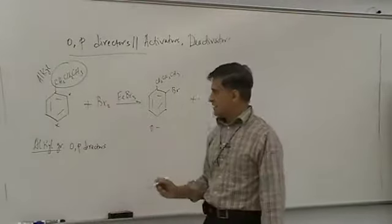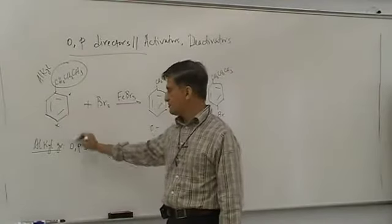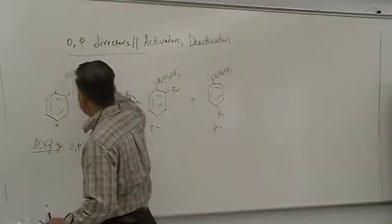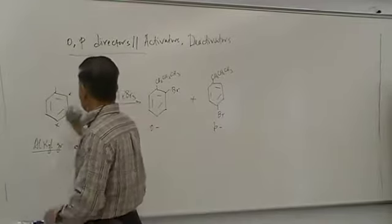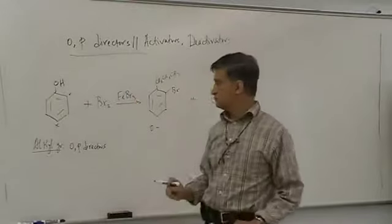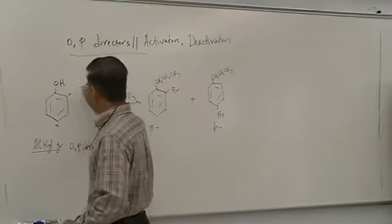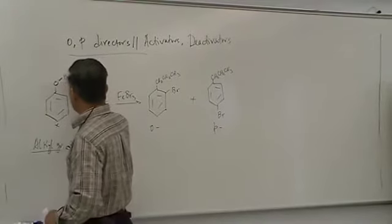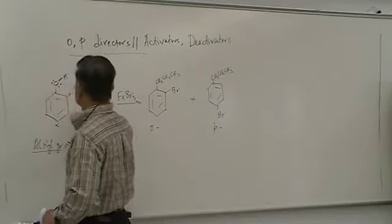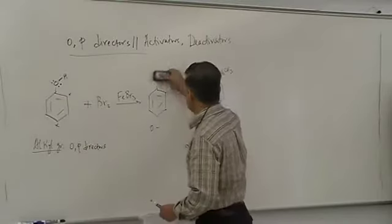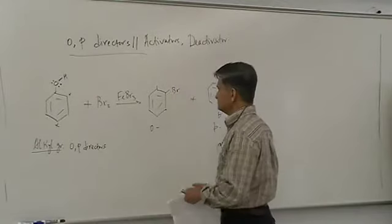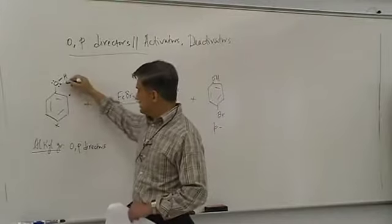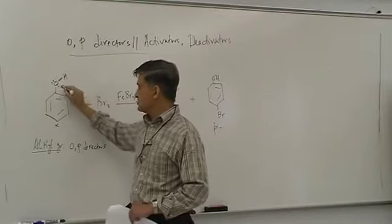Instead of having an alkyl group, if I have an OH group — benzene with attached OH is called phenol. You need to look carefully at the bonds in phenol: oxygen has two bonds and two pairs of electrons. This OH group is also going to be an ortho-para director. If you write down the structure showing unshared pairs of electrons on the atom directly bonded to the benzene ring, you can identify ortho-para directors.